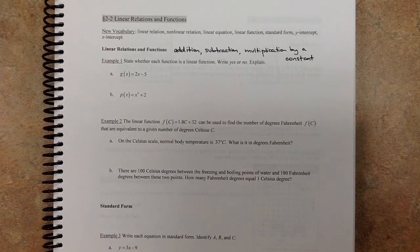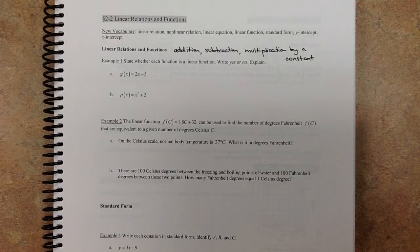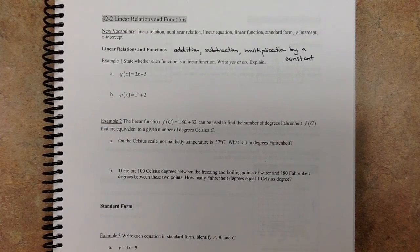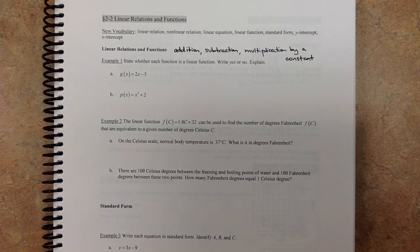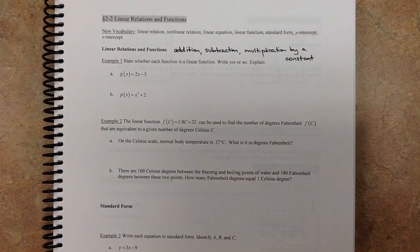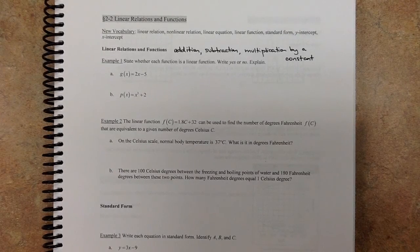You're not allowed to multiply two variables together. A variable cannot appear in the denominator. You can't have exponents other than 1. You can't have a squared power or a square root or anything like that. So you'll have examples in your homework where you'll have to answer this question: State whether the function is linear or not.